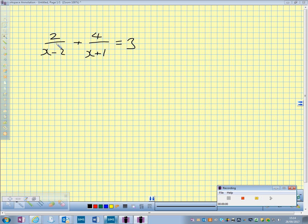So we need to multiply top and bottom of this one by x plus 1. So we're going to have 2 upon x plus 1 all over x minus 2, x plus 1 plus 4.